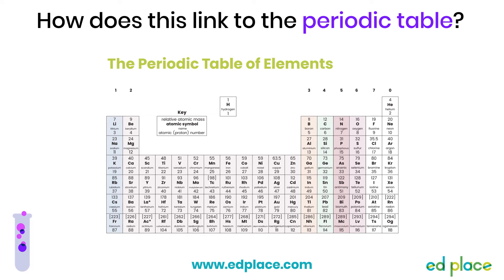Each element from the periodic table has a symbol. This symbol can be made up of one or two letters, but it always starts with a capital letter. For example, the symbol for nitrogen is N, and the symbol for lithium is Li.